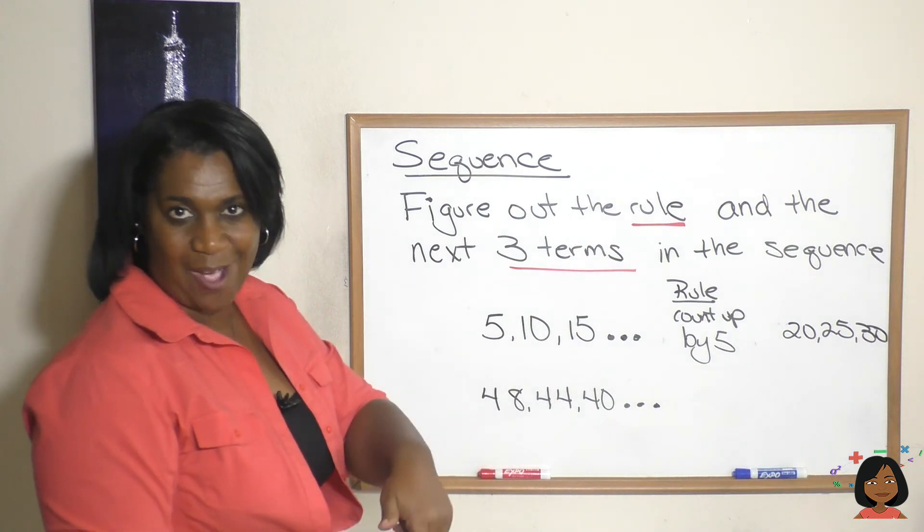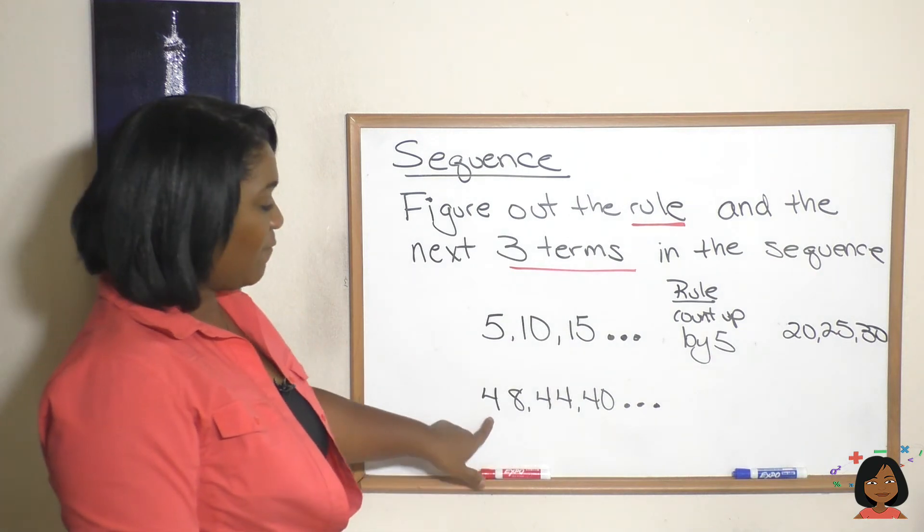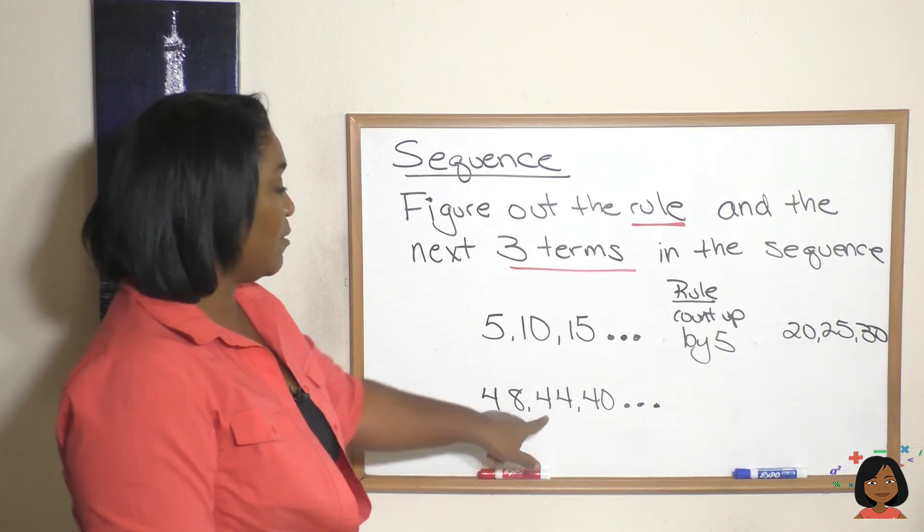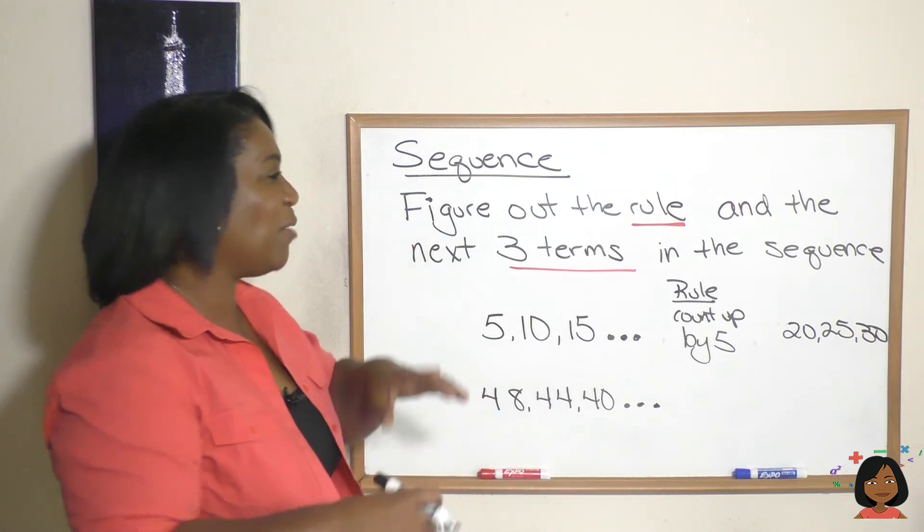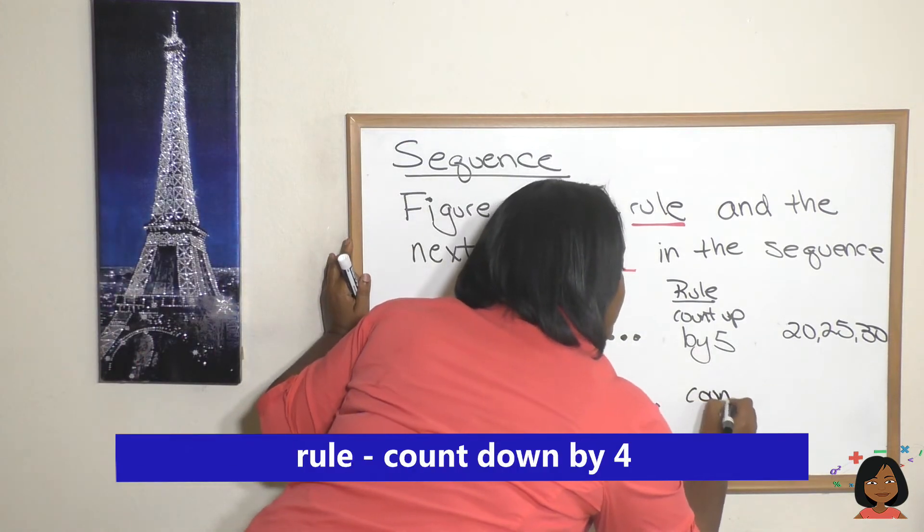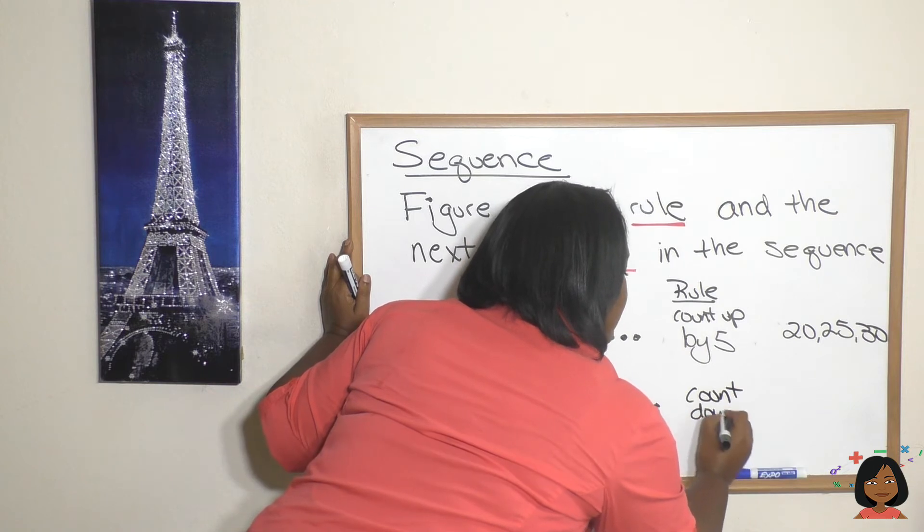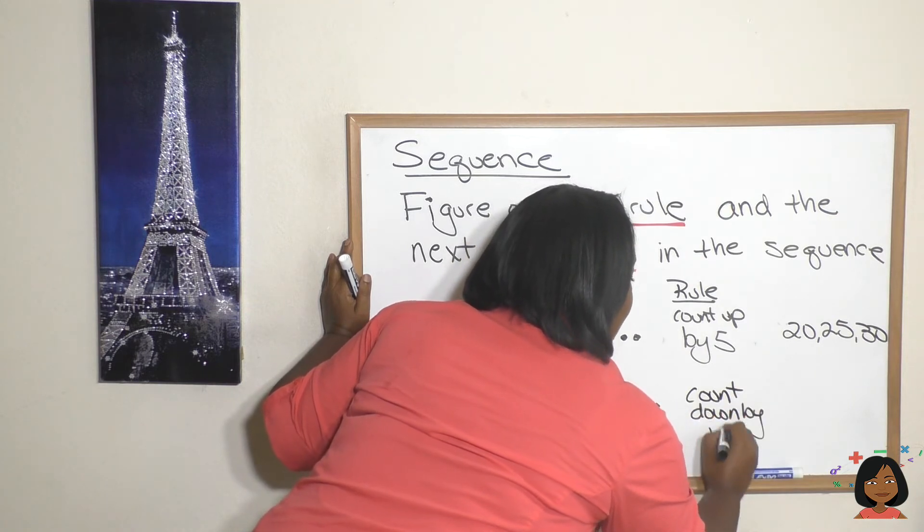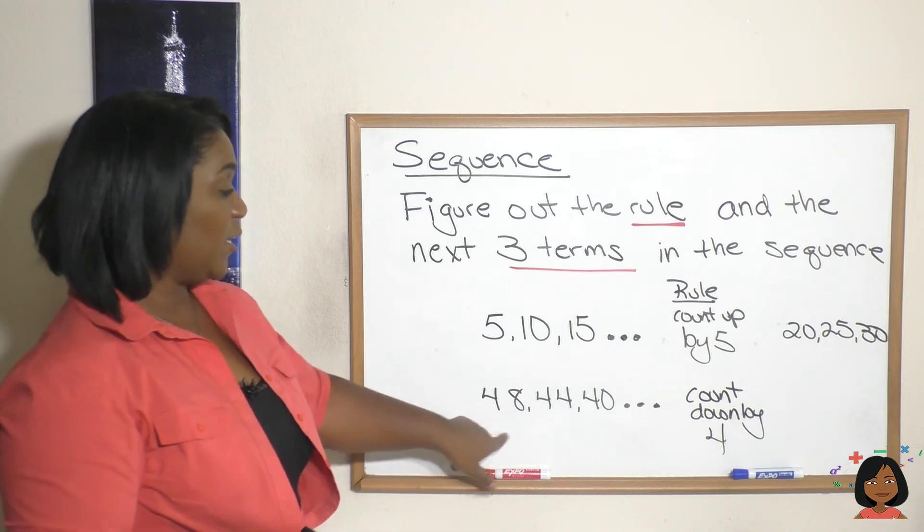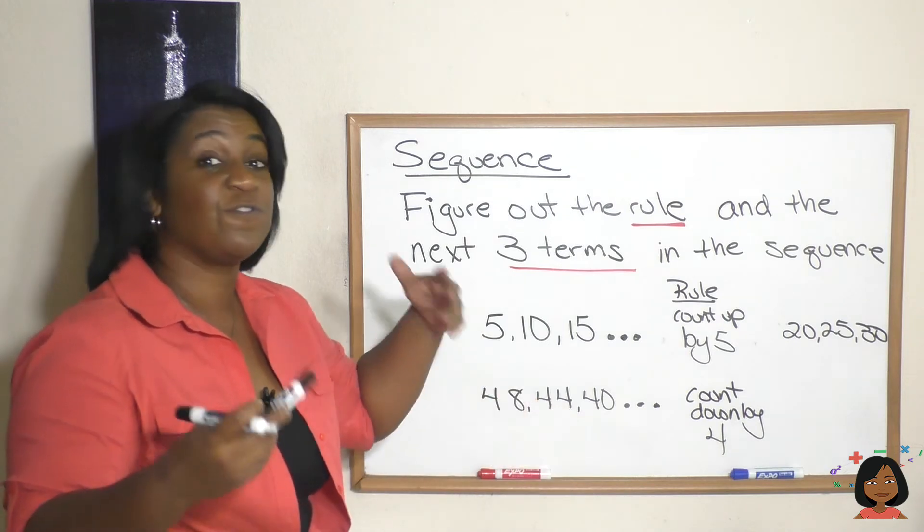Well from 48 to 44 it was four, right? We went down by four. 44 to 40 went down by four. So what's the rule? Count down by four. All right, and what are the next three terms? Well let's see: 48, 44, 40...